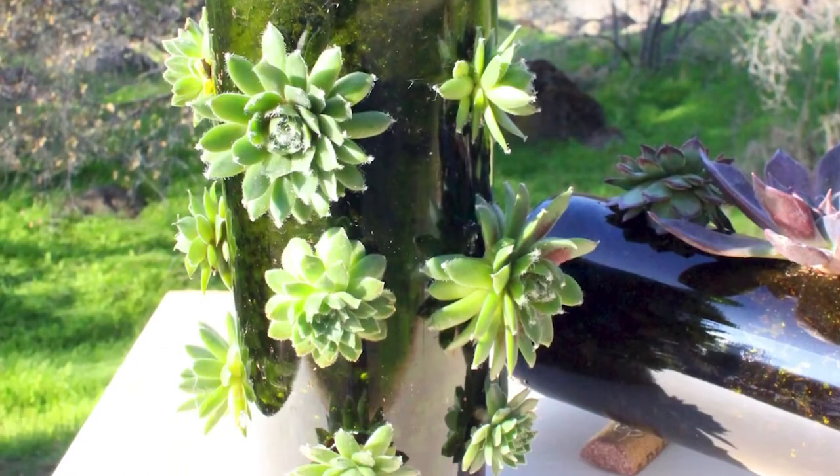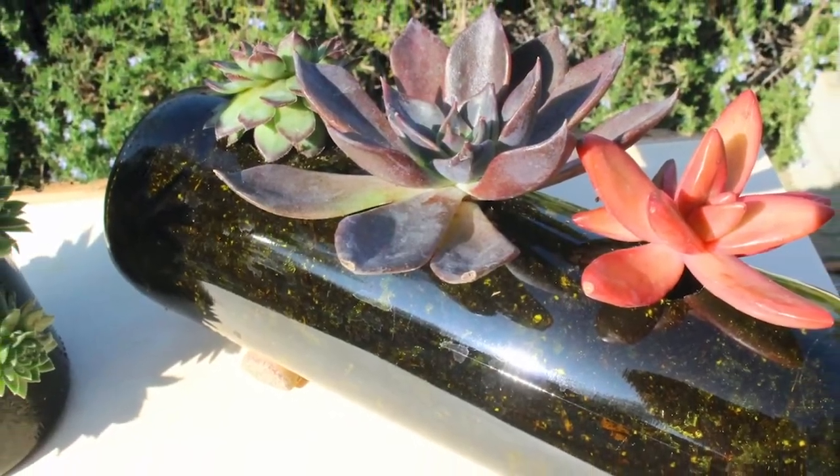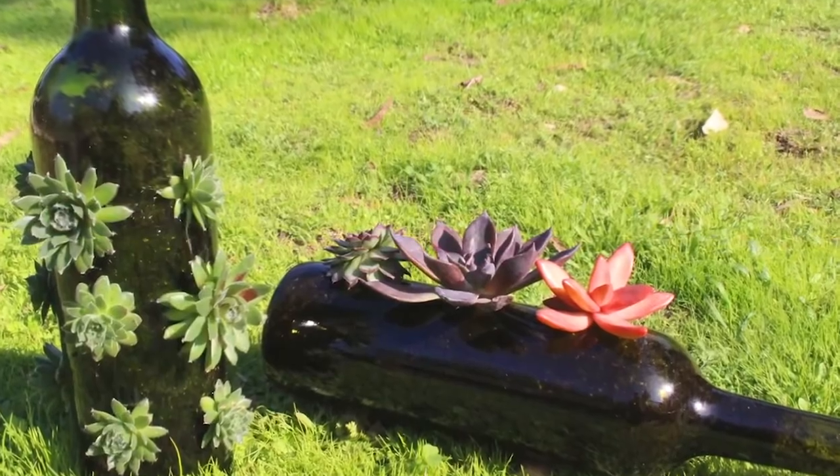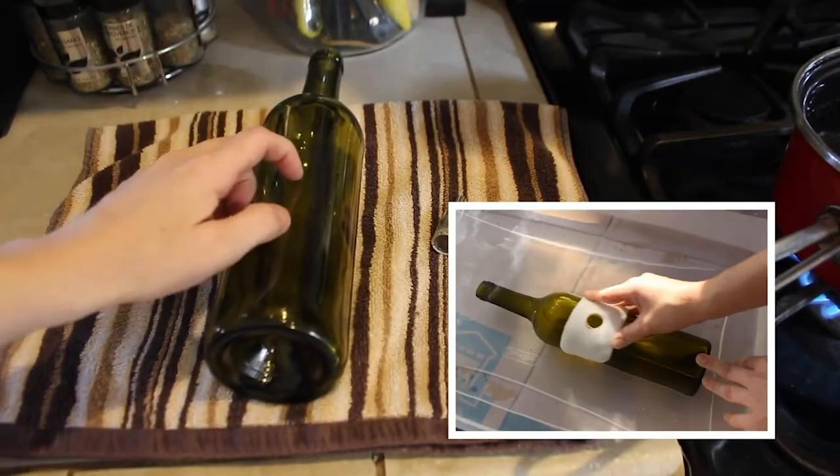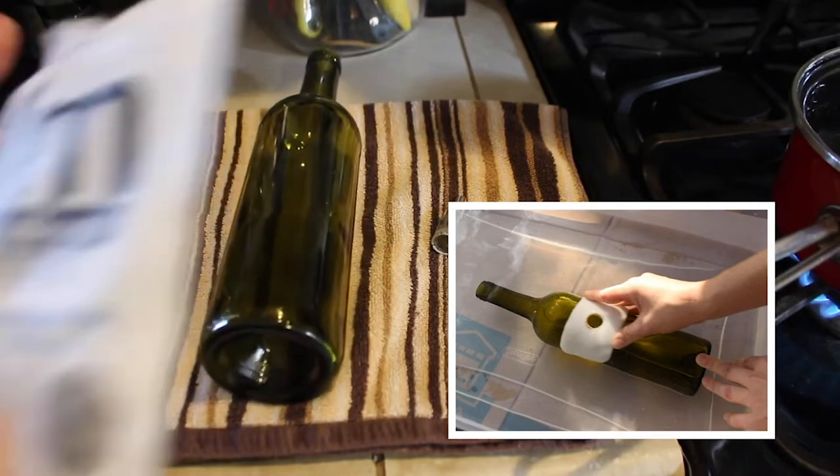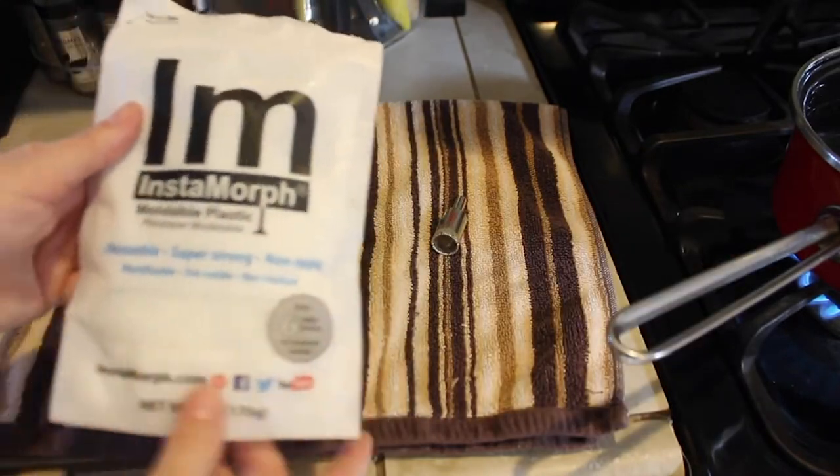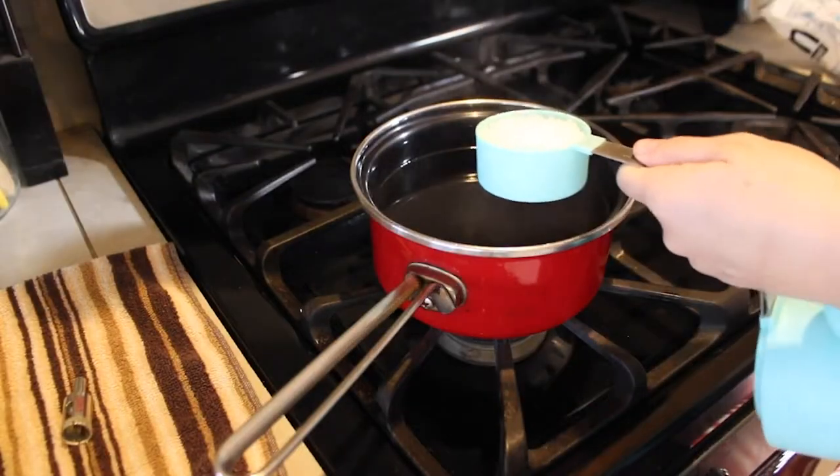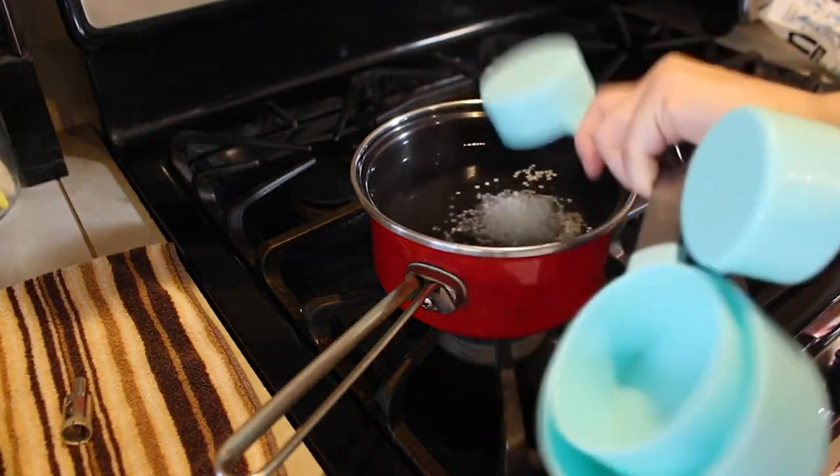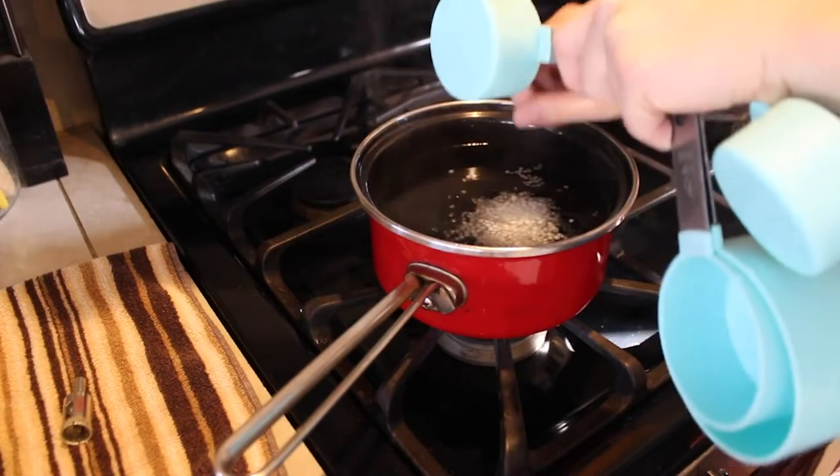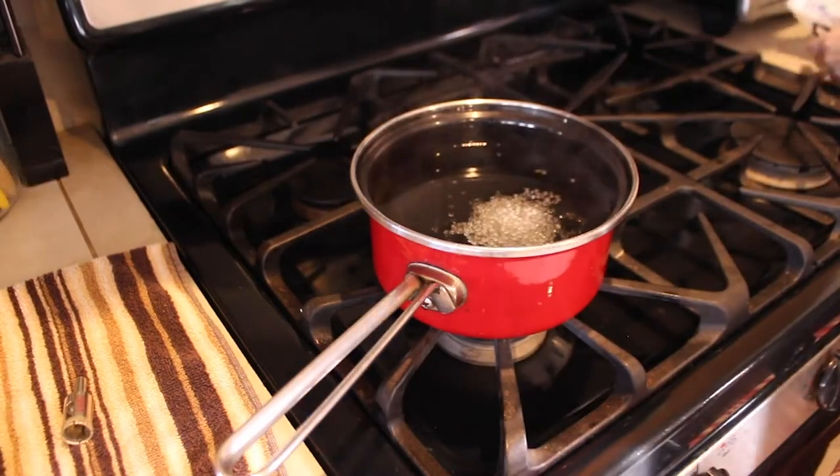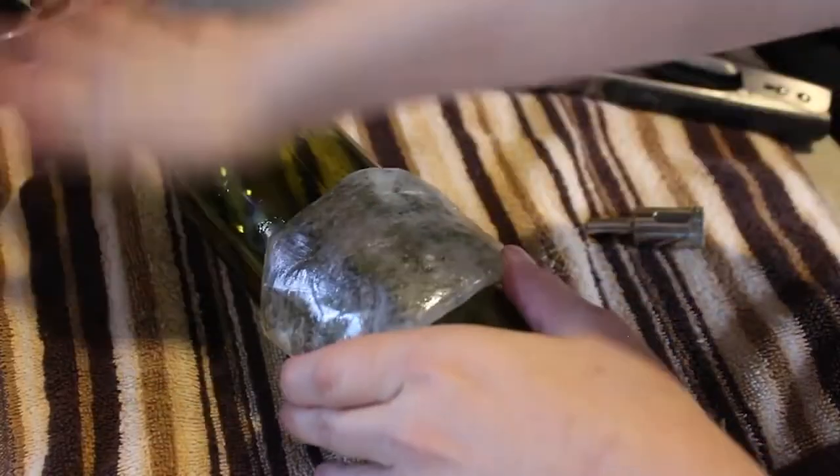So for our final DIY for the day, we are going to make a succulent planter out of wine bottles. Two different styles, but the same method. And it's going to be a little bit different than the method we used earlier for a wine bottle planter. So I use this product called Instamorph. I really love it. It's pretty awesome. You heat it up and you can mold it into any shape you want and when it cools off, it stays in that shape. So essentially, I used about a one-fourth cup and you put it in hot water. It doesn't have to be boiling and once it turns translucent, you can take it out just make sure it is not too hot to the touch and you can mold it around the item.